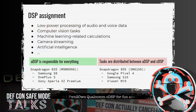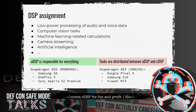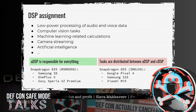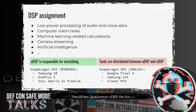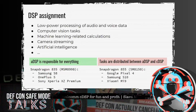ADSP and CDSP processors are intended for tasks such as processing of audio and voice data, computer vision, machine learning calculations, camera streaming, artificial intelligence, and more. On some devices such as the Sony Xperia XZ, only the ADSP processor is responsible for all these tasks. But on other devices such as the Pixel 4, these tasks are shared between ADSP and CDSP.